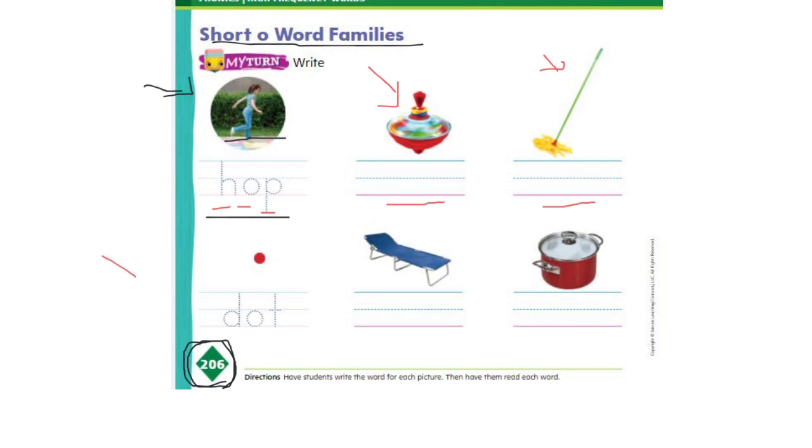Now on the second row we have the ot word family. The first one is already done. This is a dot. Here's the word dot: d-o-t, dot, dot. Trace the word dot please.